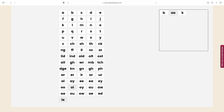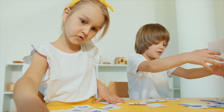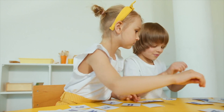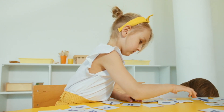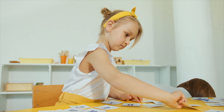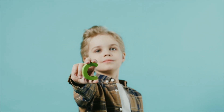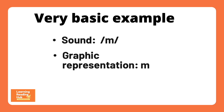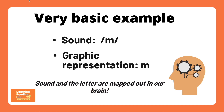I'll leave you a link in the video description. I'll quickly summarize what orthographic mapping is and why it is so important. As children learn to read with phonics, they are developing a pool of familiar words in their mind. They do this through the mental process of linking the individual sounds in words with their graphemes — that is, their graphic representation or letters. A super basic example: the sound of the letter M is /m/ and the graphic representation is the letter M itself. Sound and letter are mapped out in our brain.